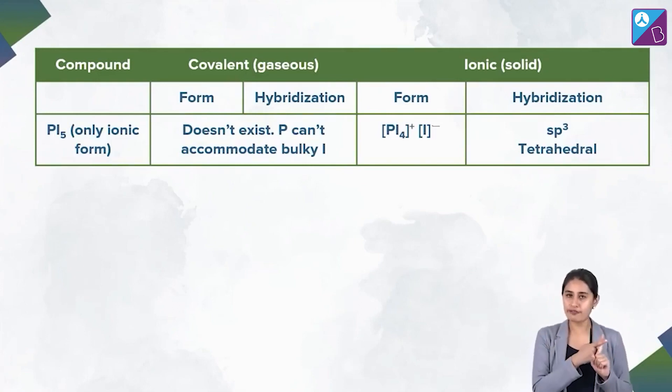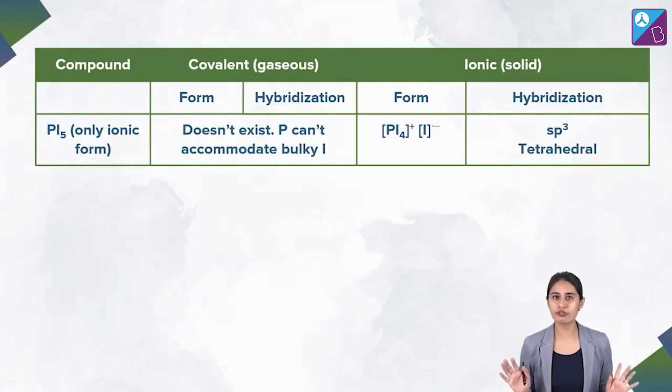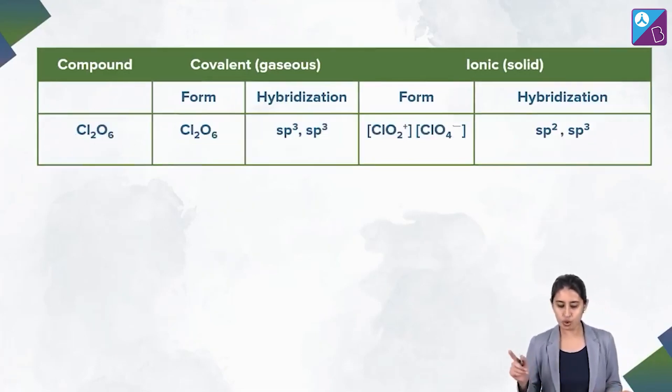So PF5, PCl5, PBr5, PI5 cases should be on your fingertips. Next one that you must remember is this one, Cl2O6.